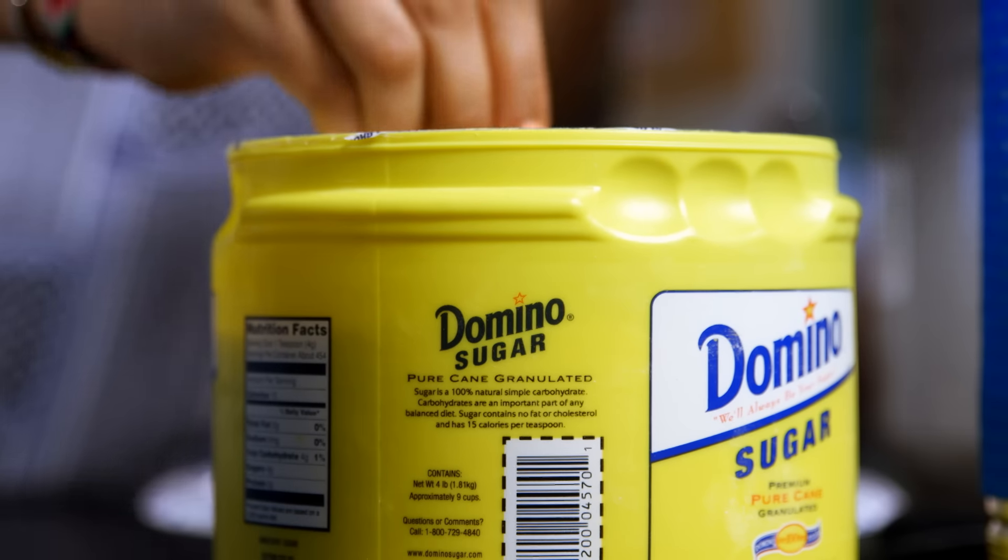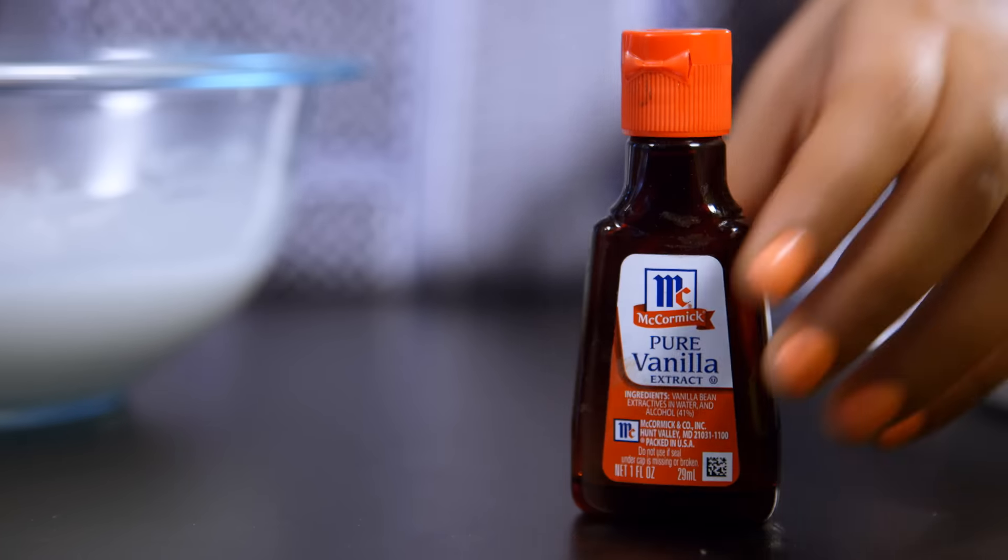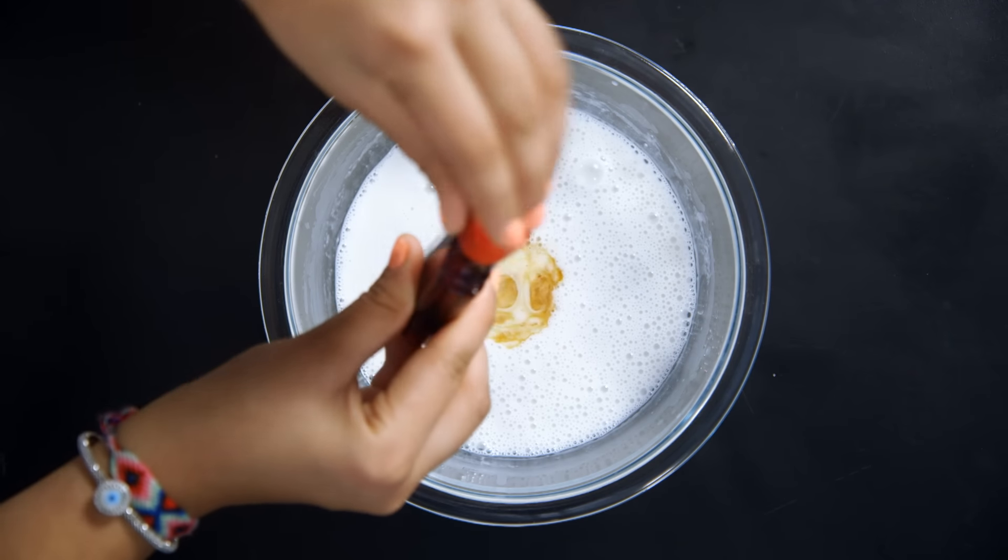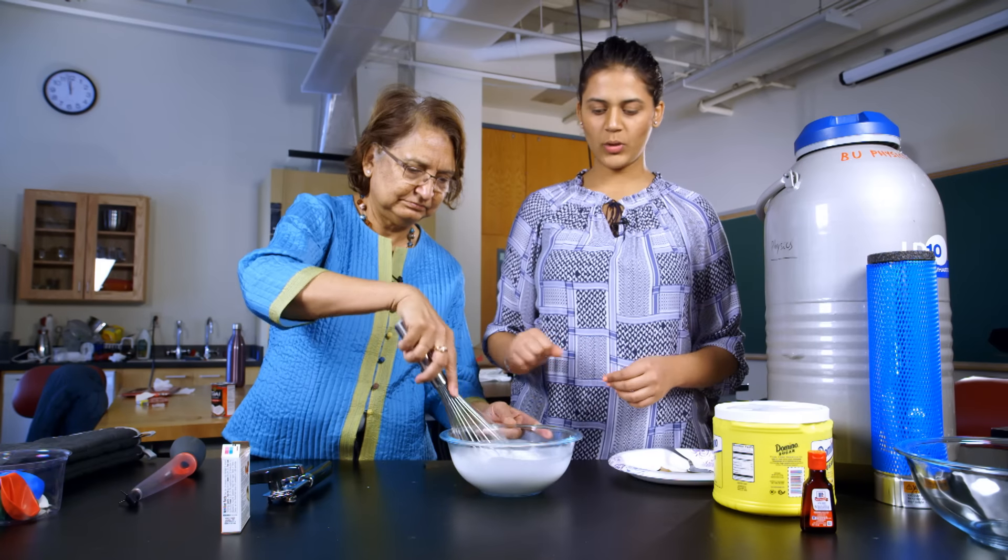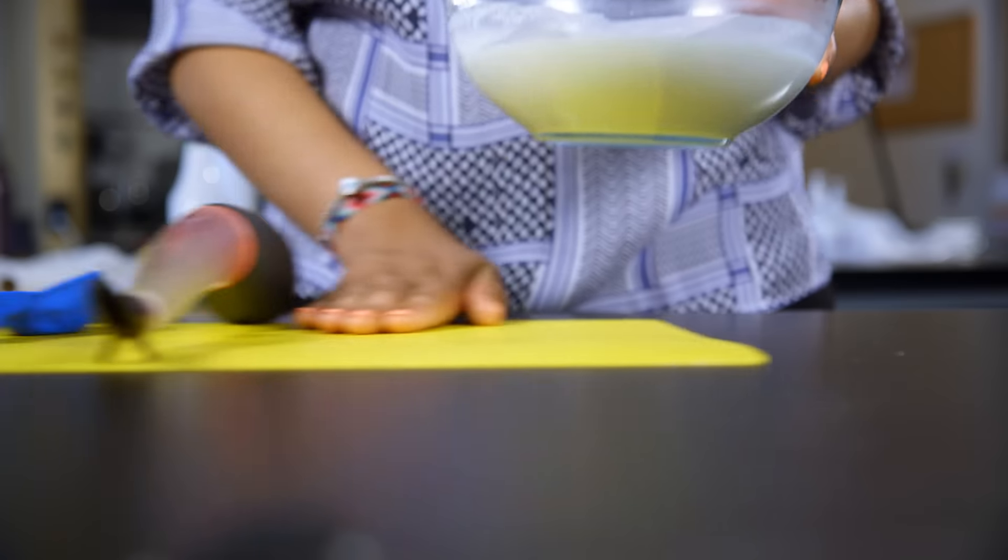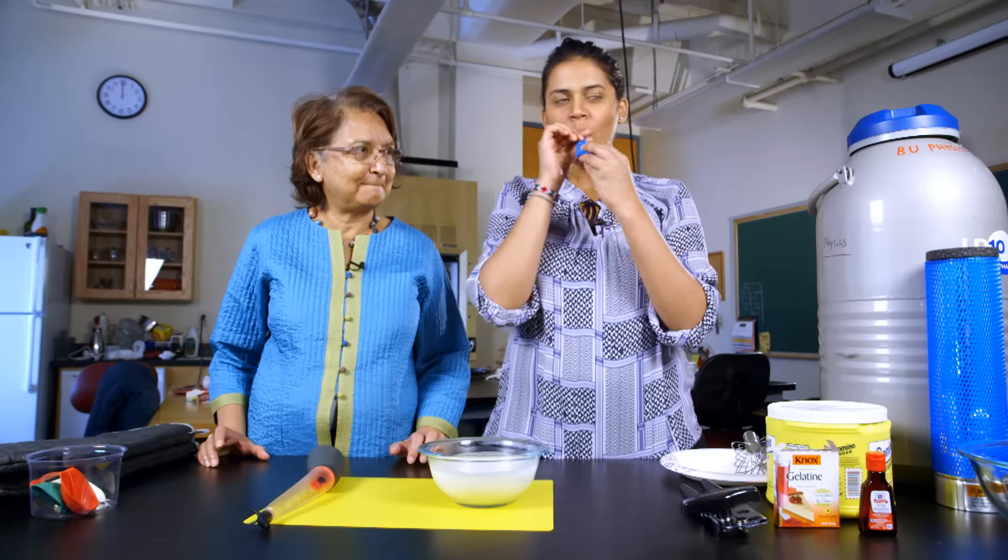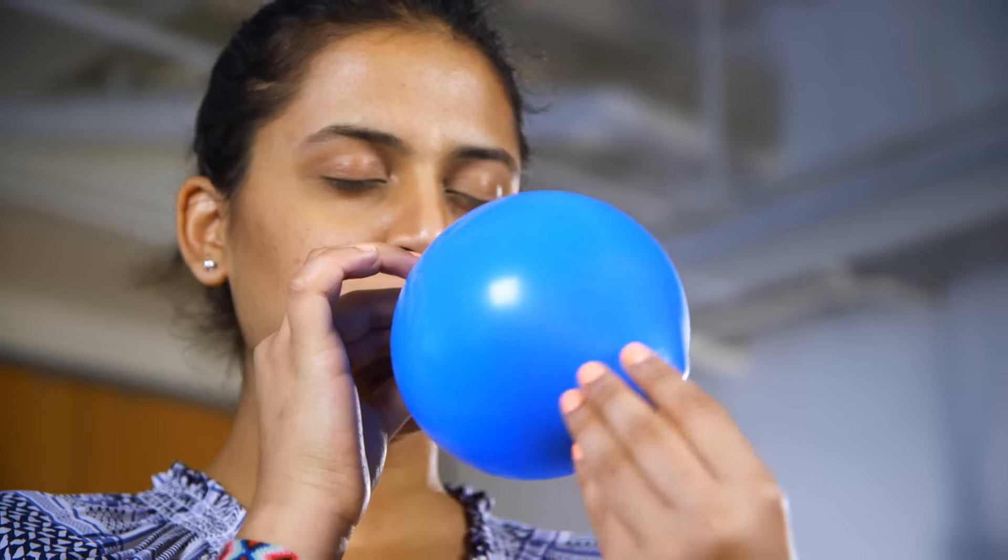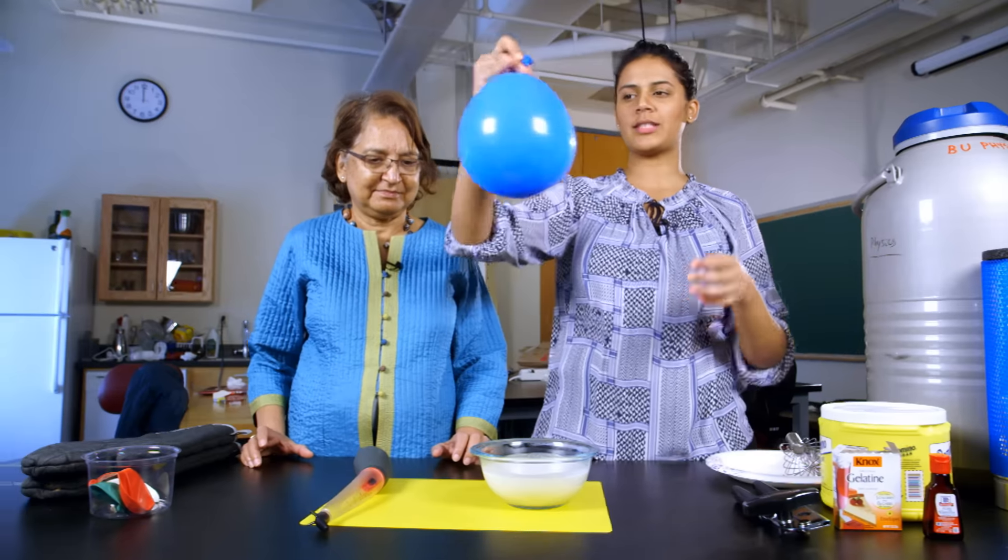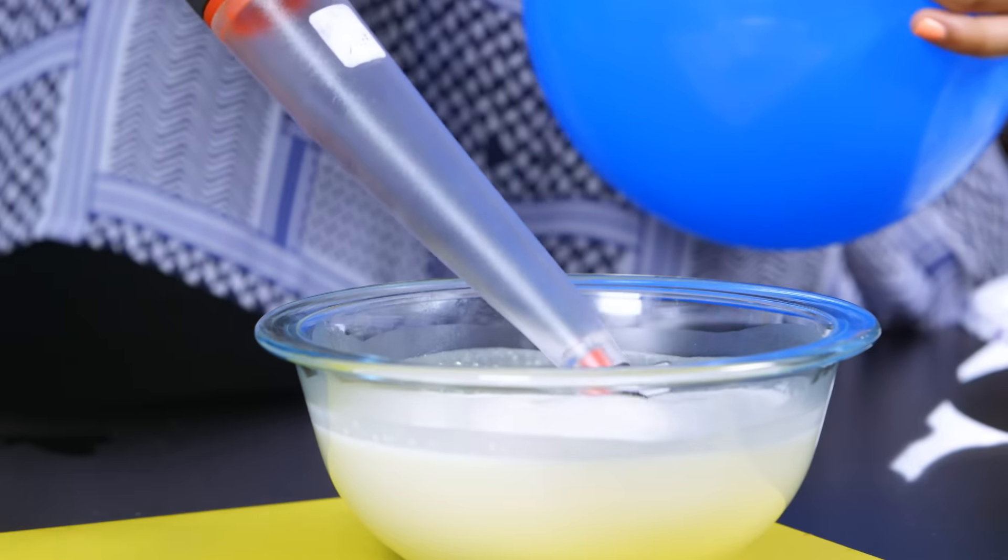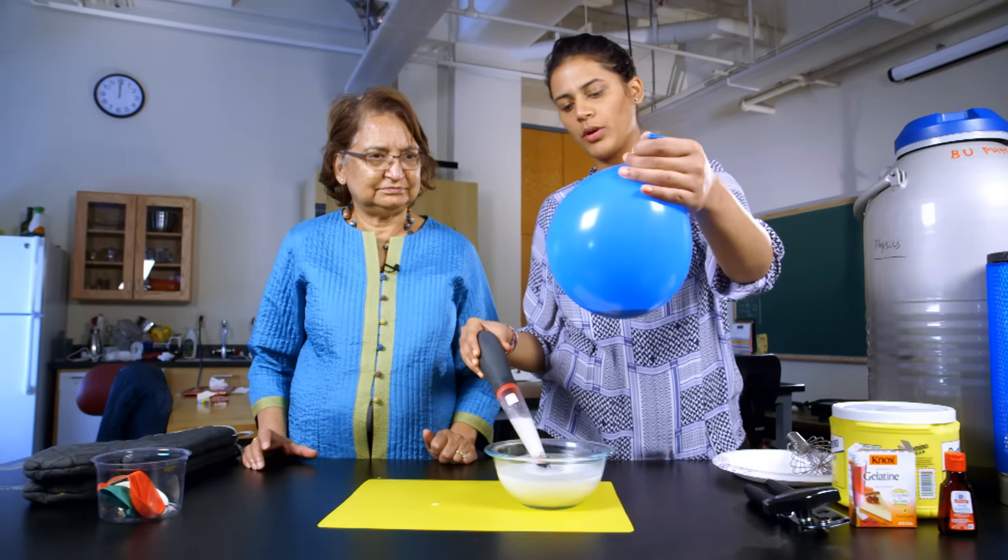Now we're just going to add two tablespoons of sugar. We're going to add some vanilla extract. And then once it's well mixed, we'll just blow up our balloon to about this size. And then this is our mixture. You want to fill it up to like one-fourth of the way.